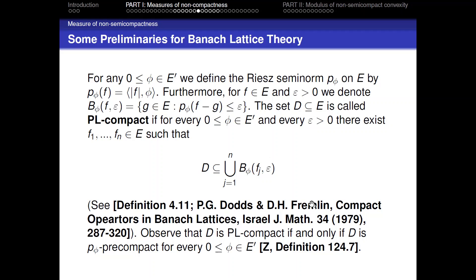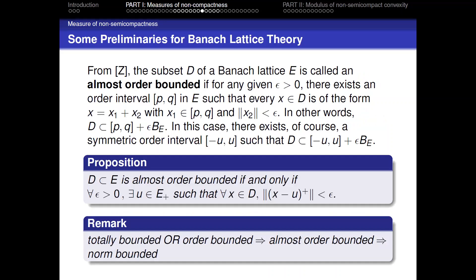This notion is defined in the Dodds-Fremlin paper. From Zaanen's book, a set is PL-compact if and only if it is p_φ-precompact for every positive φ in the dual.